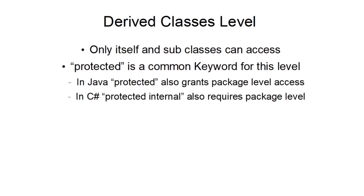For derived classes, only itself and subclasses can access. Protected is a pretty common keyword, but not always. In Java, protected also grants package-level access. And then in C#, protected internal gives it derived-level access but also requires it to be in the same package.